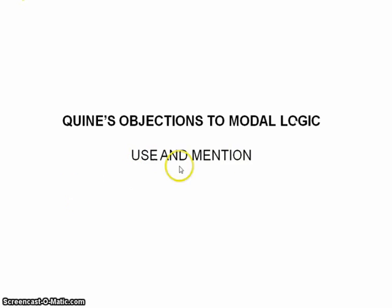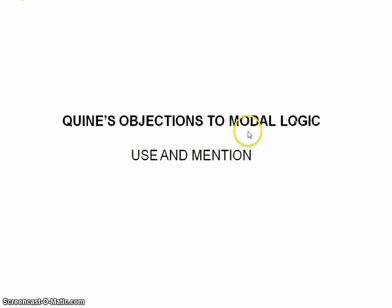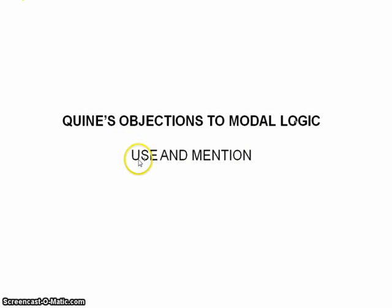Quine famously said that modal logic was conceived in sin. What was this sin? It concerns the use and mention distinction. This is a very important distinction which anybody who has even the slightest interest in modern philosophy should be aware of. You might already know about this, but I just wanted to cover it again just to make sure.